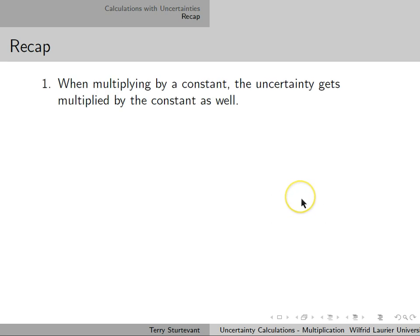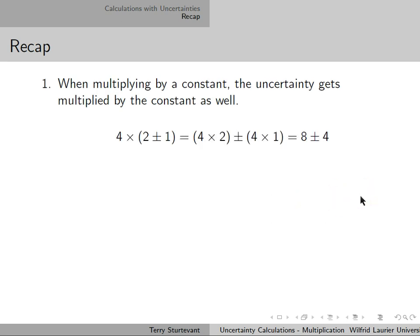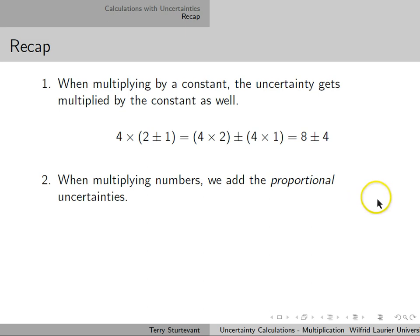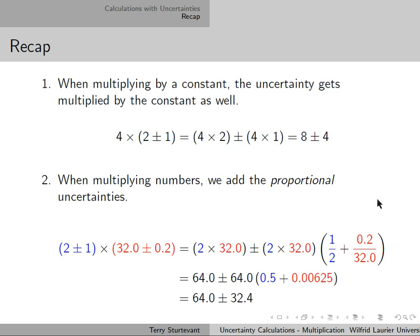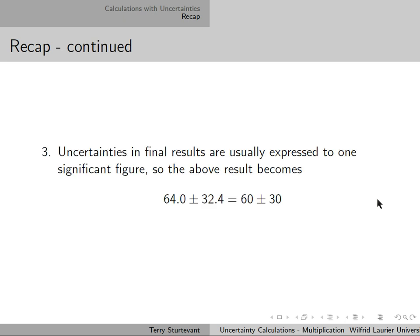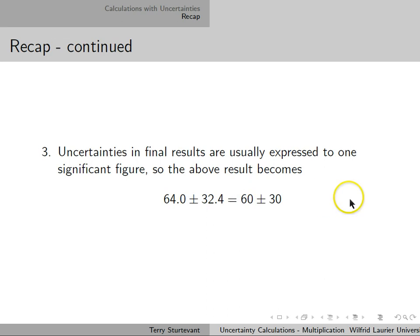To summarize: when multiplying by a constant, the uncertainty gets multiplied by that same constant. When multiplying numbers, we add the proportional uncertainties. Also remember that uncertainties in final results are usually expressed to one significant figure, so a result like 64.0 plus or minus 32.4 would be expressed as 60 plus or minus 30.